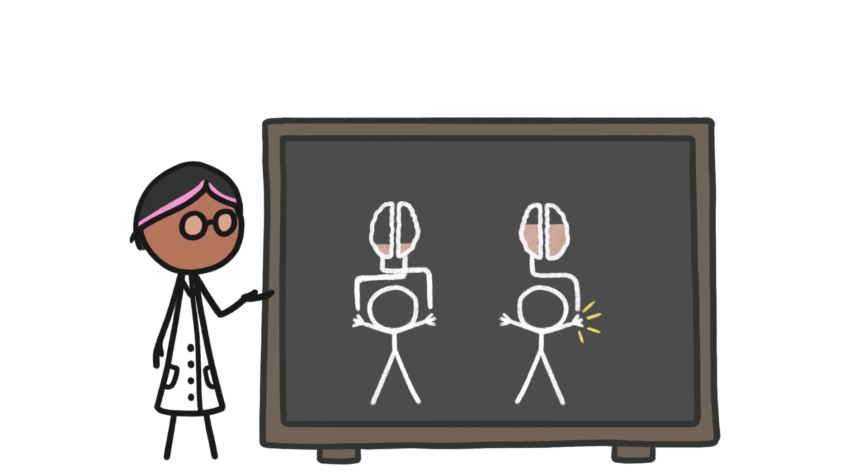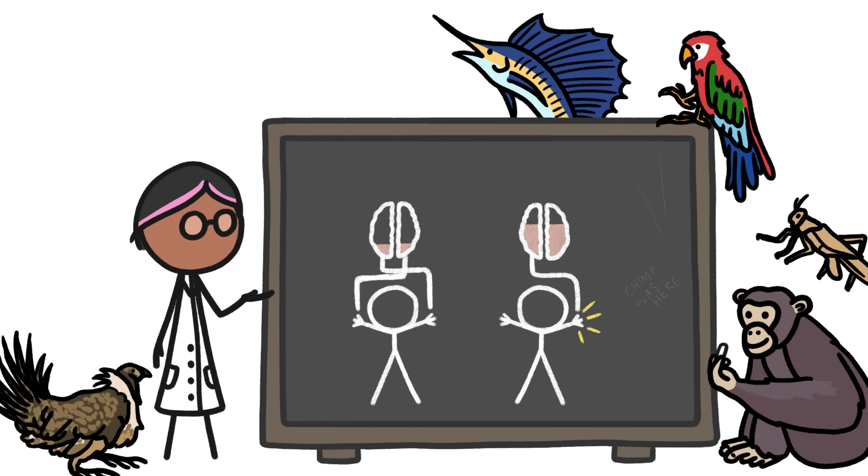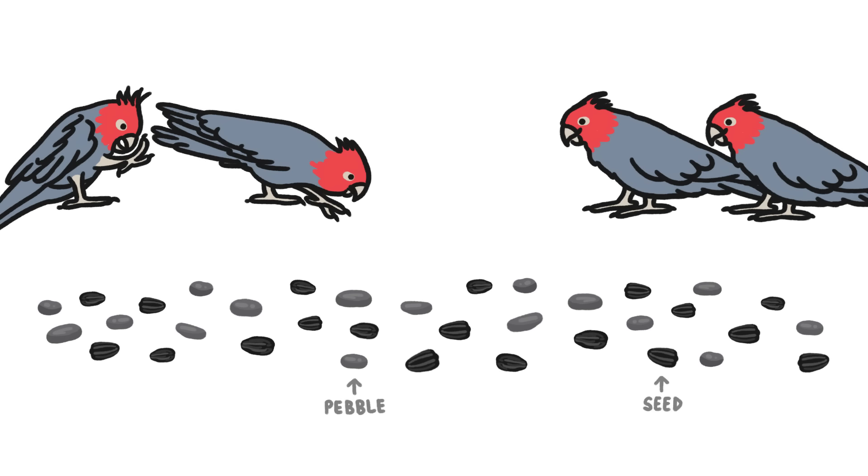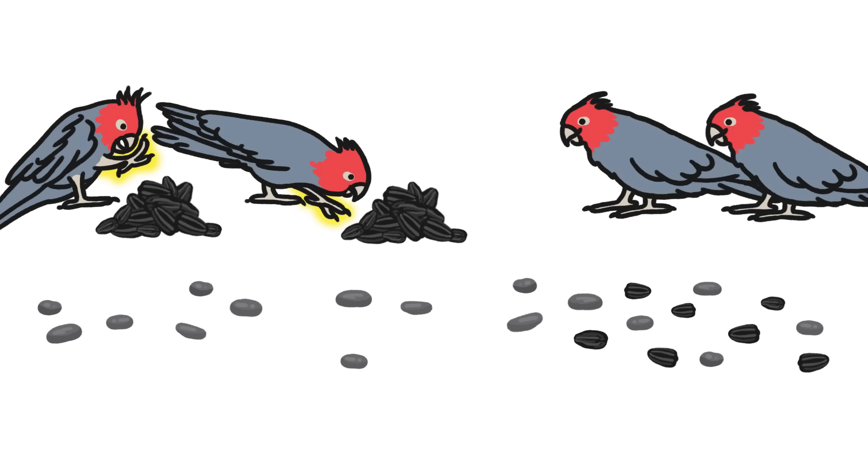This efficiency explanation is still somewhat theoretical, but evidence from all sorts of animals shows that having a preferred side can provide an advantage. When scientists gave a food-finding test to parrots, some of whom had a strong side preference and some didn't, the strongly-sided birds did twice as well.